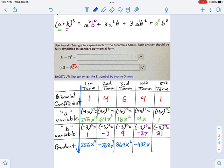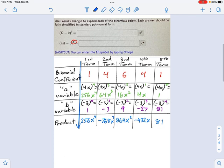So it's going to be negative 432x. And this last one's easy. I don't need a calculator for that. That's just 1 times 1 times 81. Okay? The expansion is just about done. Here's the answer. I'm going to say 4x minus 3 to the 4th power equals, and now I add up all my terms. 256x to the 4th minus 768x cubed plus 864x squared minus 432x plus 81.